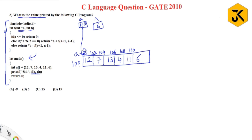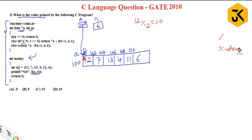It is waiting outside. Immediately it checks: is n <= 0? No. So it goes to the else case. In the else case, we check star a: 'a' is 100, so star a means go inside — star a is 12. 12 % 2 is 0, so the condition star a % 2 == 0 is true. It will execute the true case: return star a plus f(a+1, n-1).